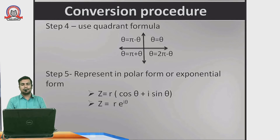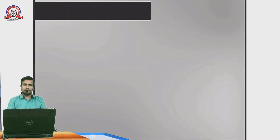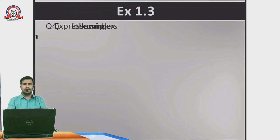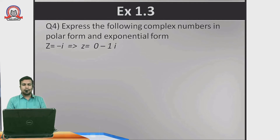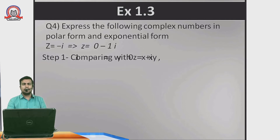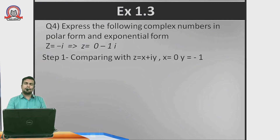Polar format is z = r(cosθ + i sinθ) and exponential format is z = re^(iθ). Now for Exercise 1.3, Question 4: z = −i. Here −i means the real part is absent, so we can write z = 0 − i·1. Comparing with z = x + iy, we get x = 0 and y = −1. That completes Step 1.